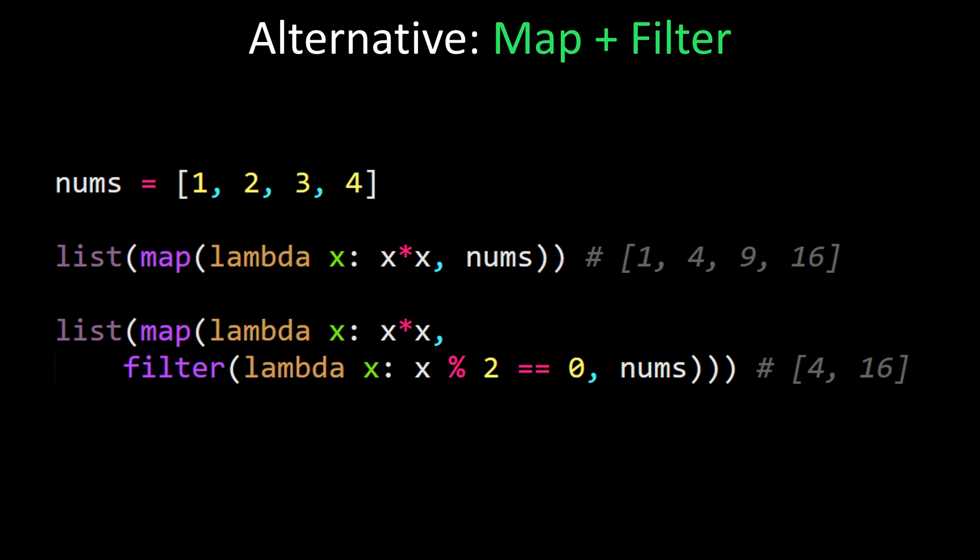on the elements that pass the filter, you again do the map function of the lambda that squares each element. Now I believe this is also beautiful and powerful notation, but to me it's not nearly as elegant and pythonic and readable as the list comprehension notation.